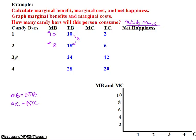Candy bar number three: we went from $18 of happiness with two candy bars to $24 of happiness, so that's six additional dollars of happiness — that's my marginal benefit. And for candy bar number four, we go from $24 to $28, so the marginal benefit would be $4. Those are my marginal benefits, calculated simply as the change in total benefit.